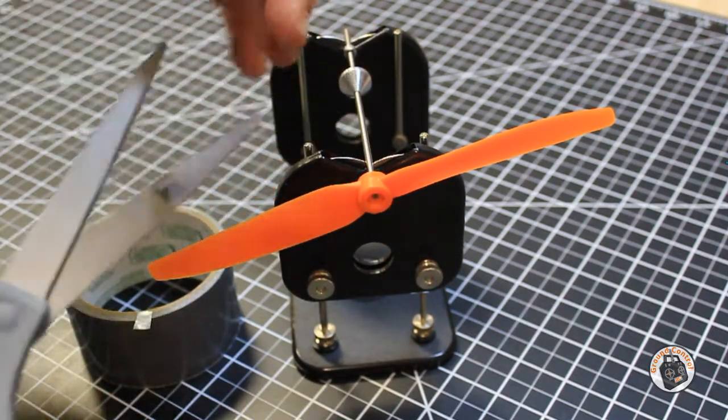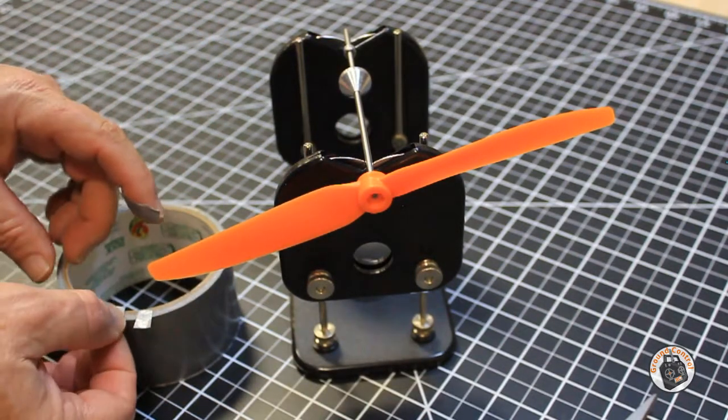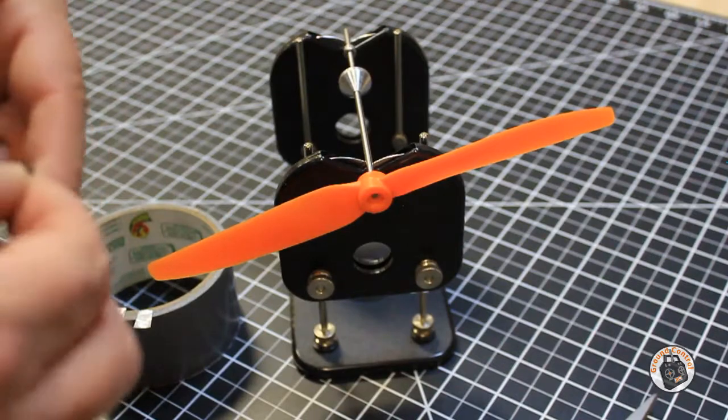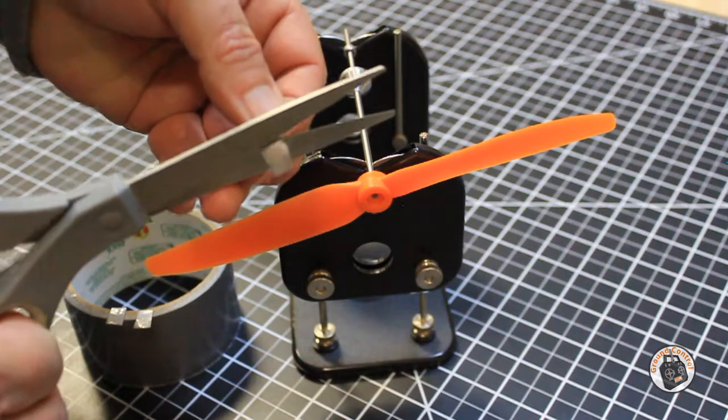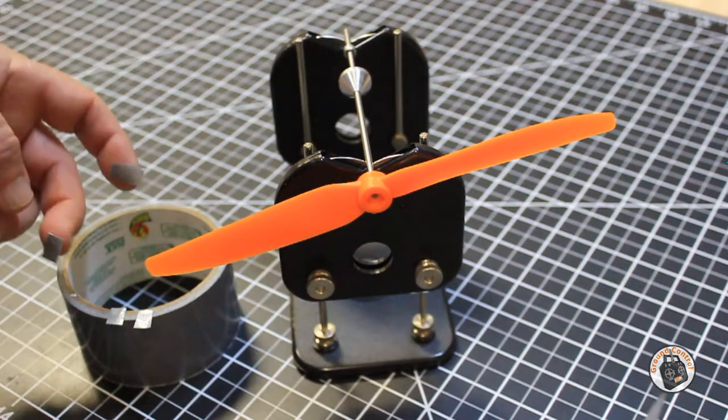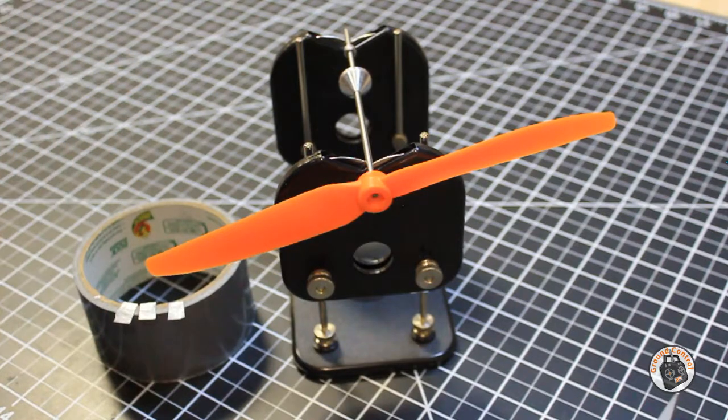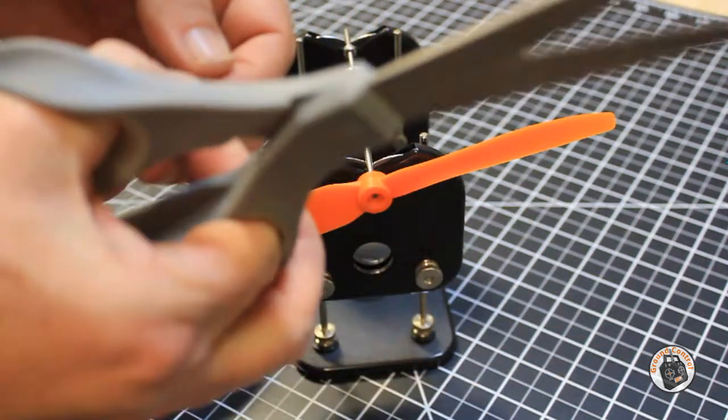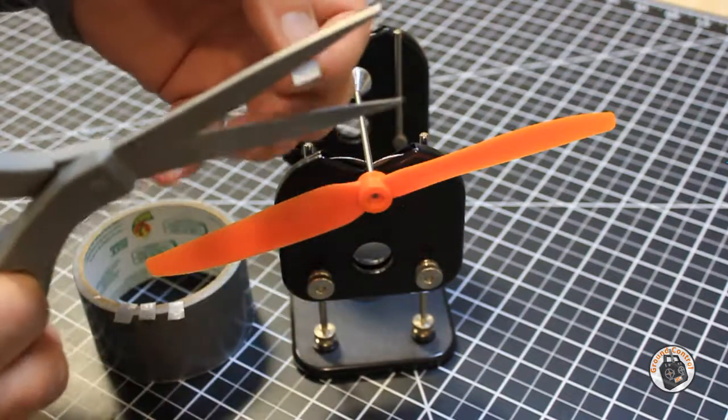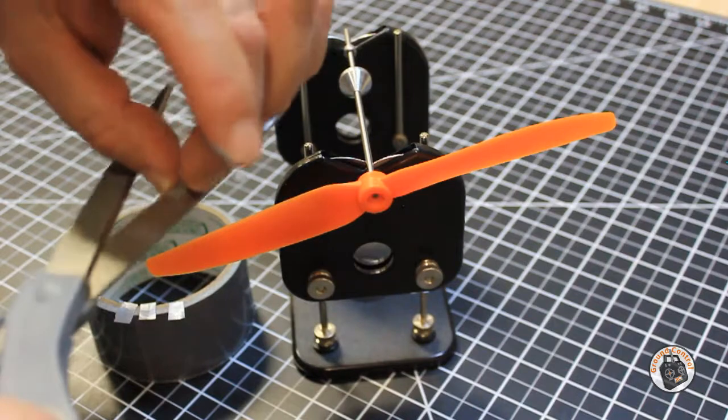They're about the same length as the thickness of the hub itself because I want to use as few of these pieces as possible to get this prop hub balanced. And it might take quite a few so go ahead and use the whole strip that you've cut off to balance that prop.